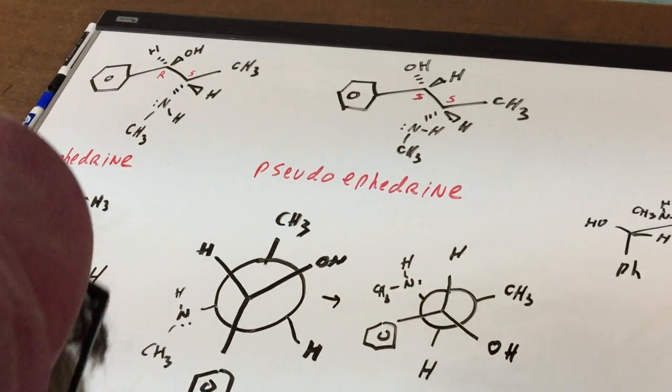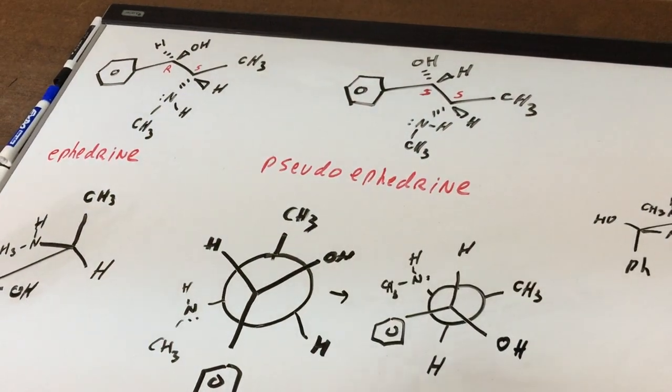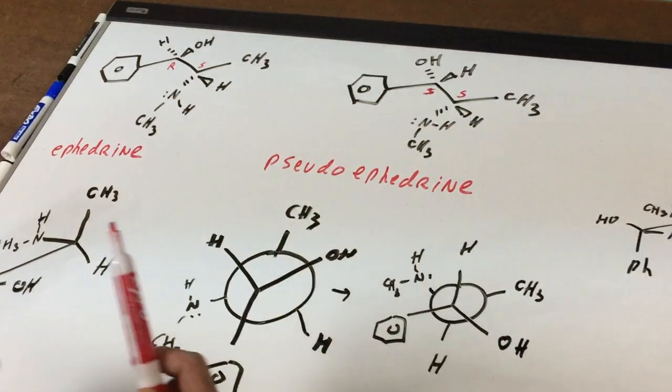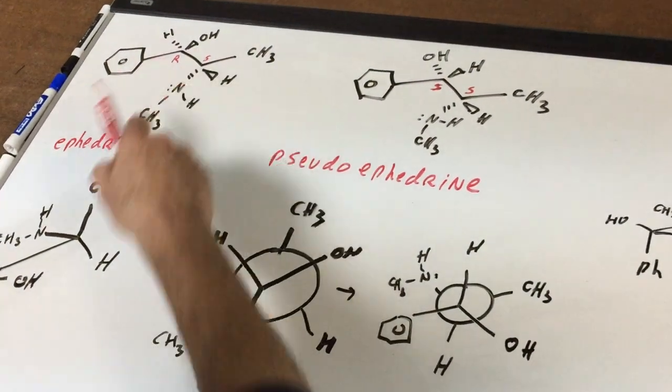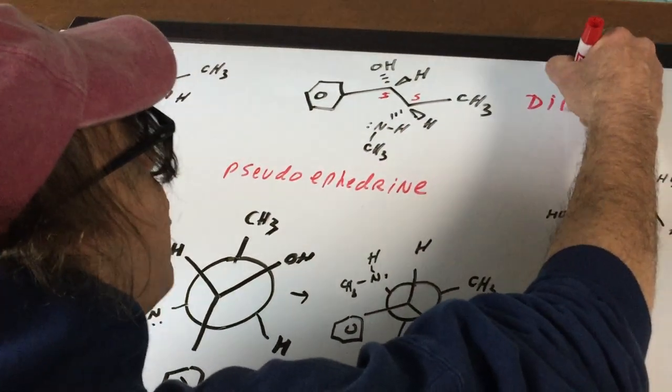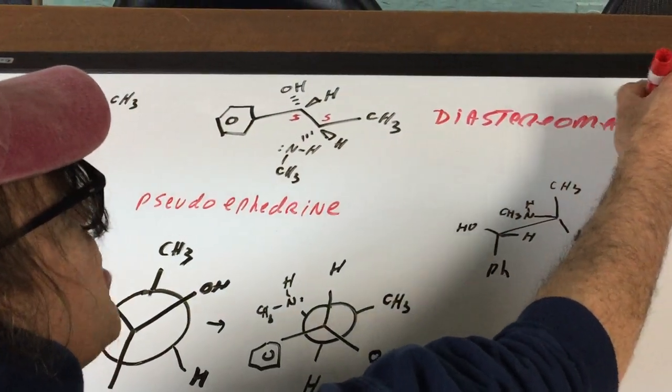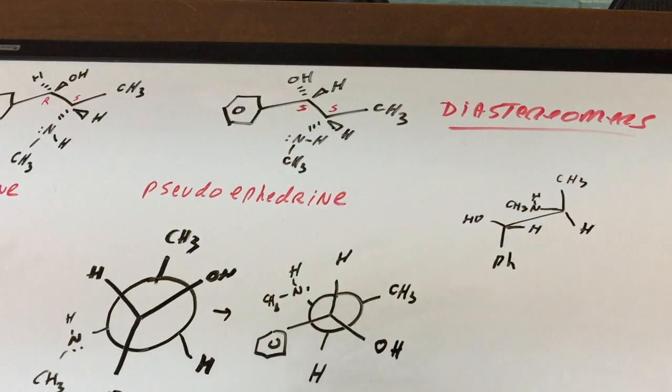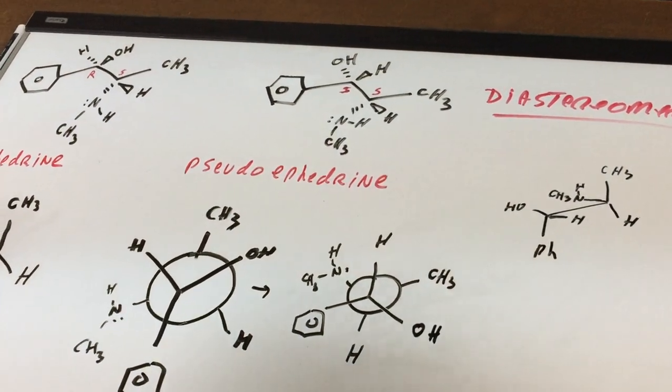If you do this, I want you as an exercise to confirm that this would be the exact same. And if I ever asked you, how does ephedrine and pseudoephedrine relate? Well, you have an RS and an SS. So that means they are diastereomers. And being diastereomers, they would have different physical properties, such as boiling point, melting point, et cetera.